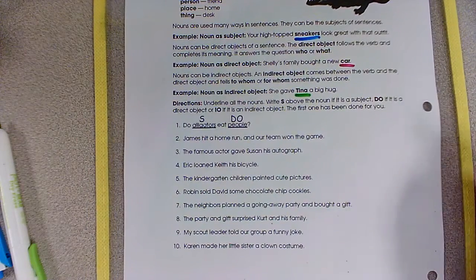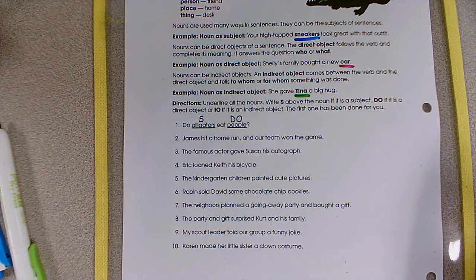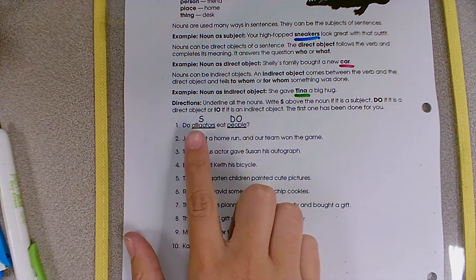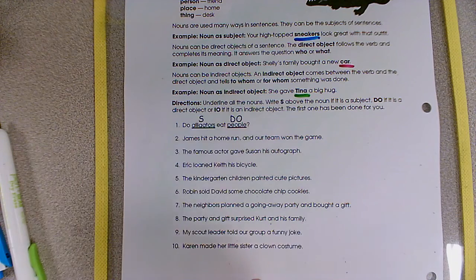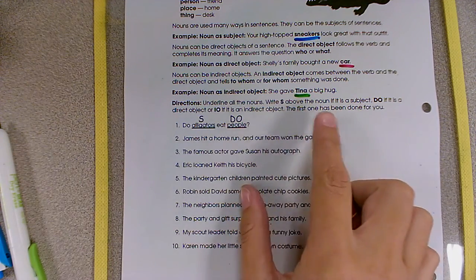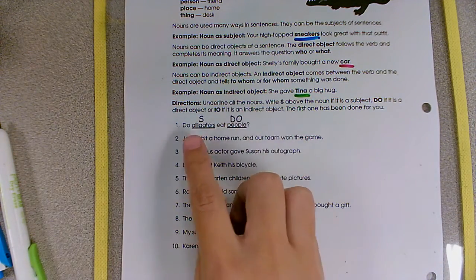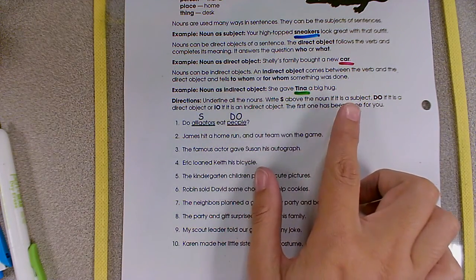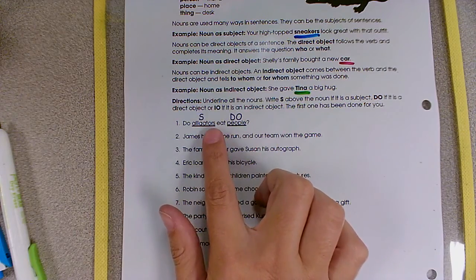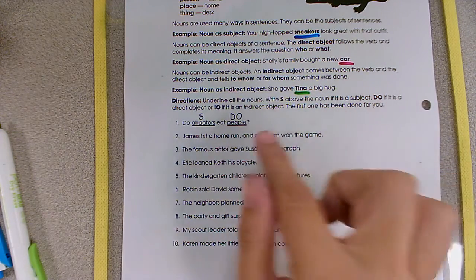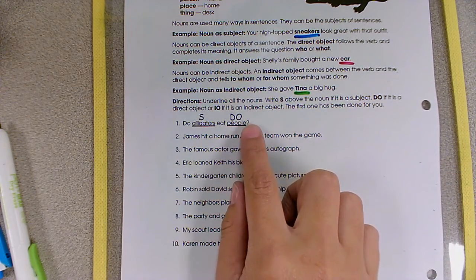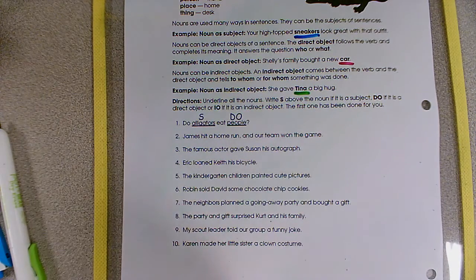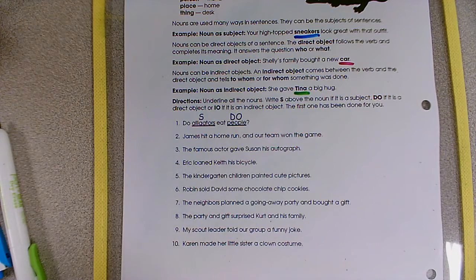So let's take a look at our sentences. We'll do some of them together. The rest of them will be your independent practice. We have an example. Do alligators eat people? Notice that our directions are to underline all of our nouns. So we've underlined the nouns. Then write S above the noun if it's a subject, like in alligators. DO if it's a direct object, like in people. Or IO if it's an indirect object.